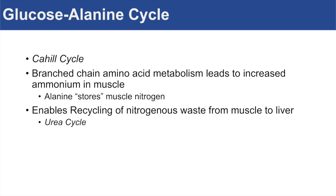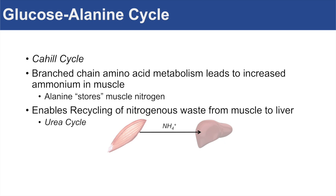When the alanine reaches the liver, the liver can then dispose of the nitrogenous waste — it can dispose of the ammonium through the urea cycle. So this process leads to the transfer of ammonium or nitrogenous waste from the muscle to the liver, where the liver can dispose of the waste through the urea cycle.